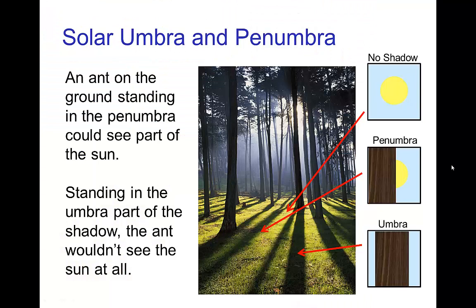Now to understand what's going on here with the umbra and penumbra, I think it's helpful to think of it this way. Let's say that you're an ant in this grassy field. If you're an ant looking up at the sun, if you're in a spot where there's no shadow, then you see the entire sun.